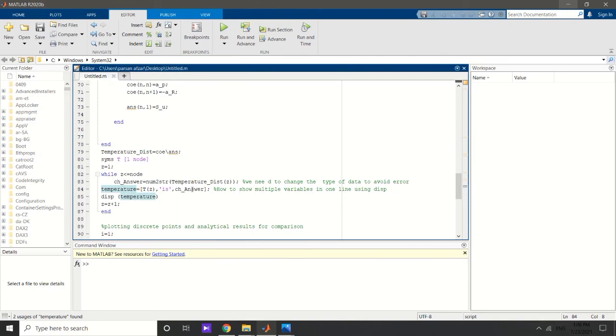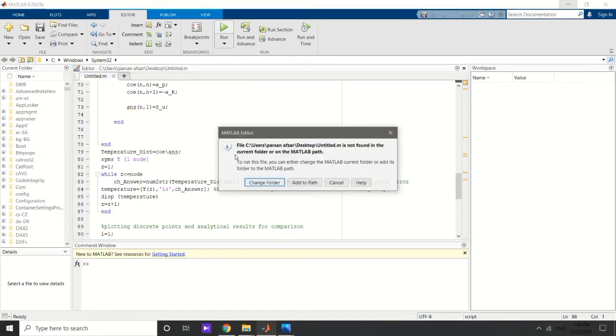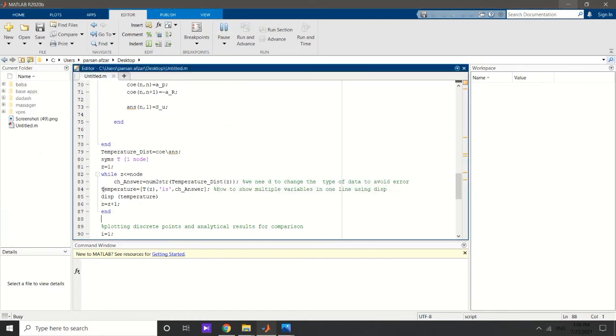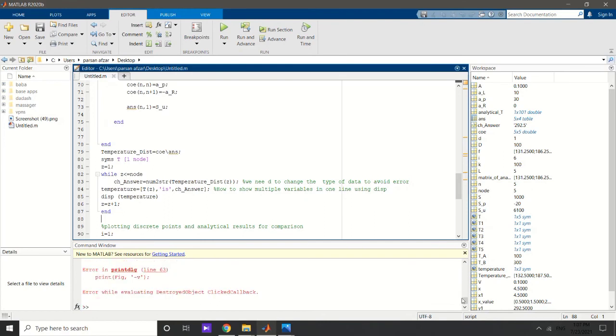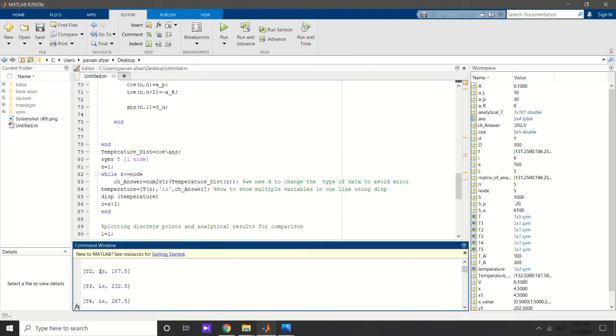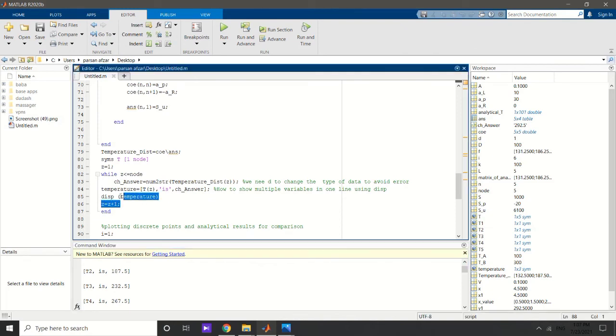I define that temperature is equal to ch answer, and remember that it should always be a string value. All things here should be string, not double or number. Up to now, if I run the code for you, you will see what happens by defining this command. See, let's pause it. Here it is.